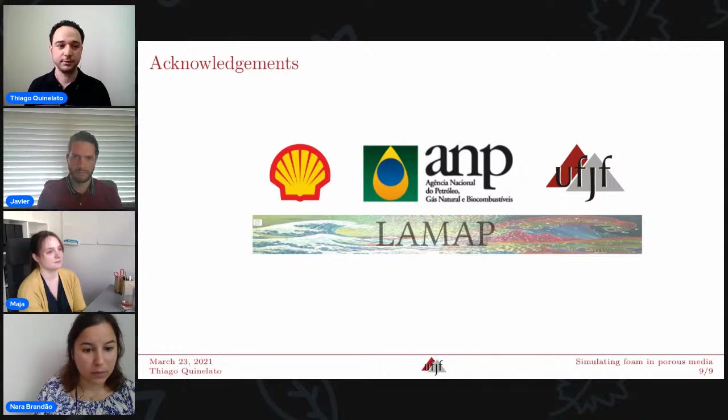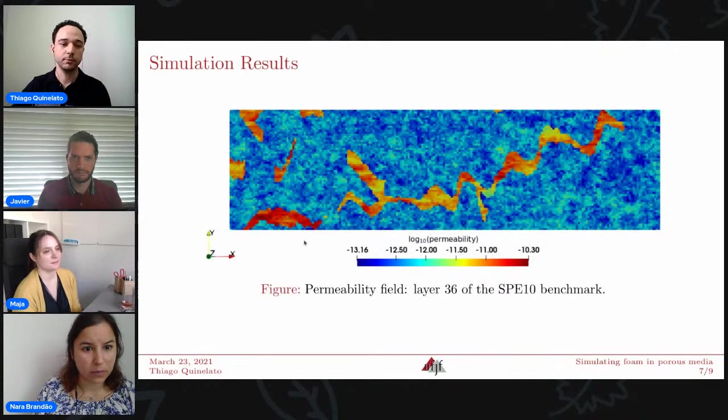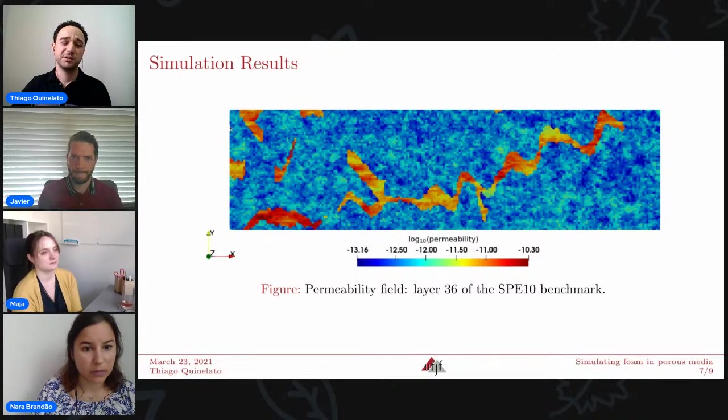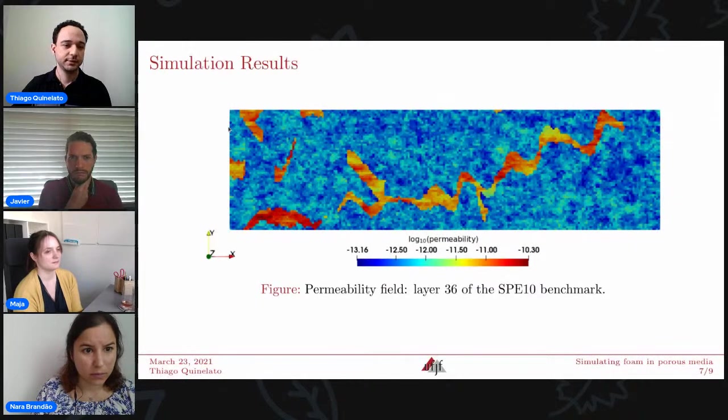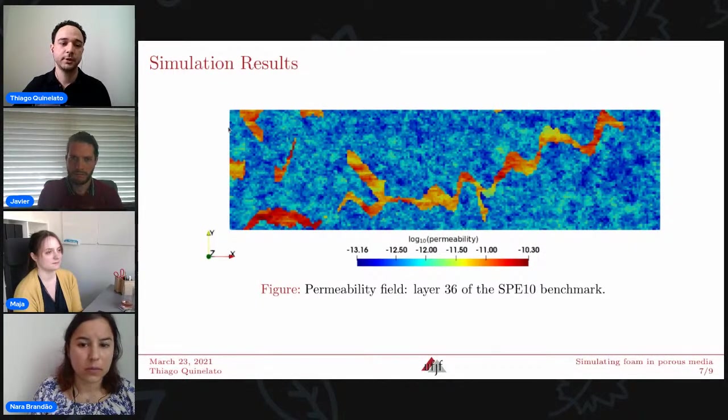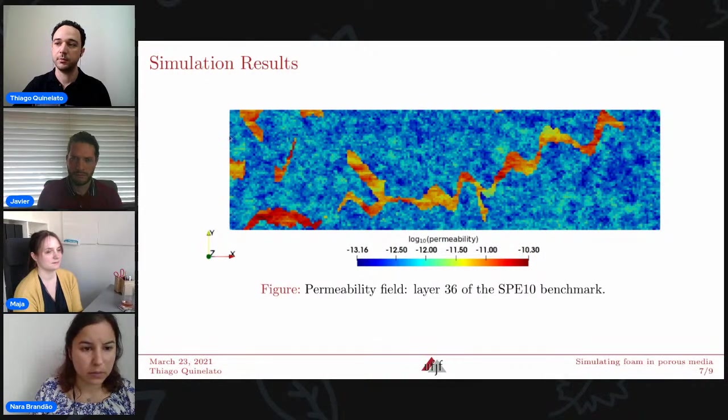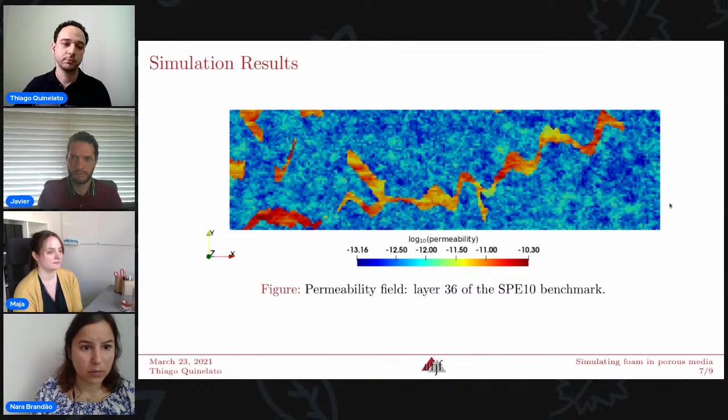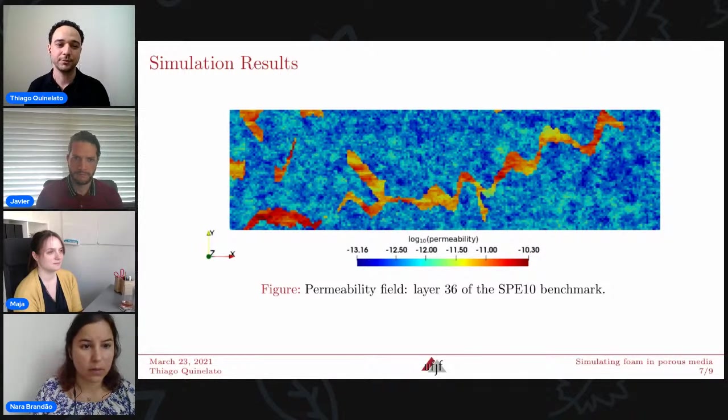The boundary conditions is just no flow in top and bottom, and fixed rate injection of the mixture of 90% gas and the rest water in this border. And in the right border, we used a constant pressure, and the fluids flow through it.